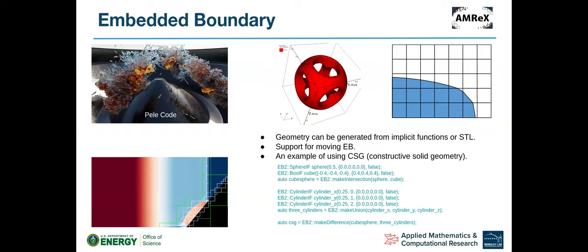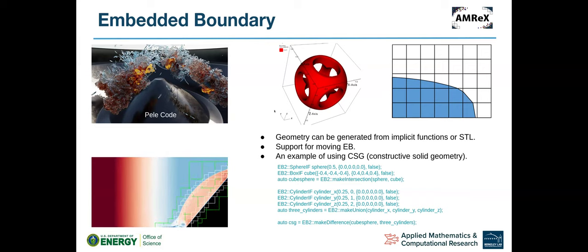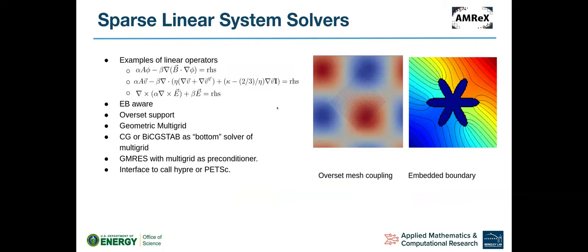We also support embedded boundaries. And there is a sparse linear system solver — here are some examples of equations it can solve: the first is diffusion, a special case of which is a Poisson solver; another is from Navier-Stokes equations; and another involves the curl of the electric field.